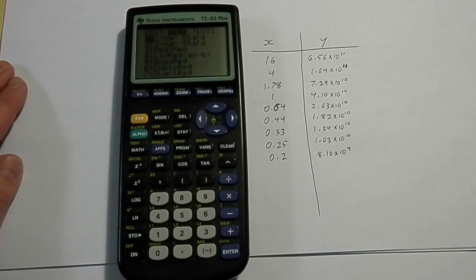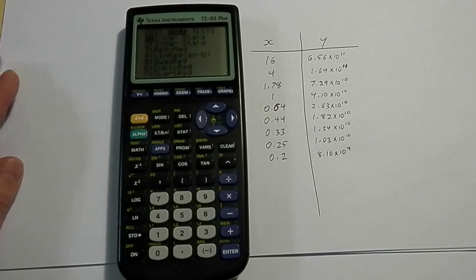On these TI calculators, instead of putting in M for slope, it uses A for slope. But it's no big deal there.